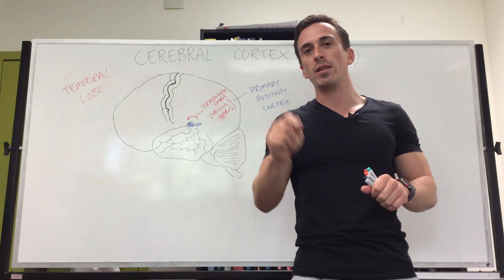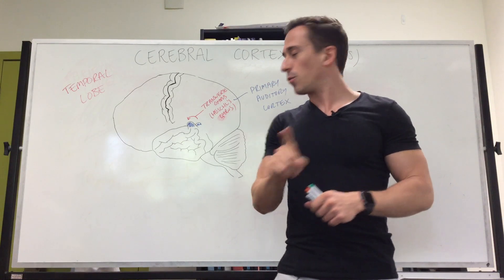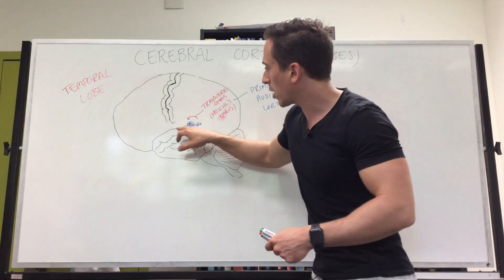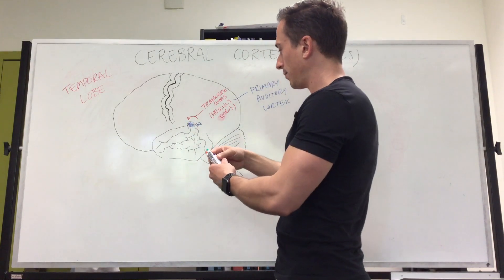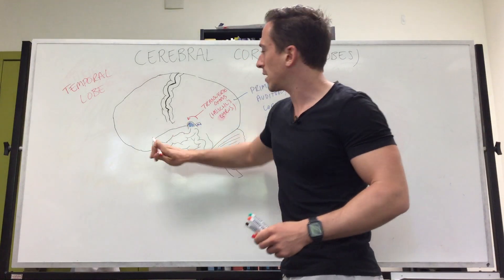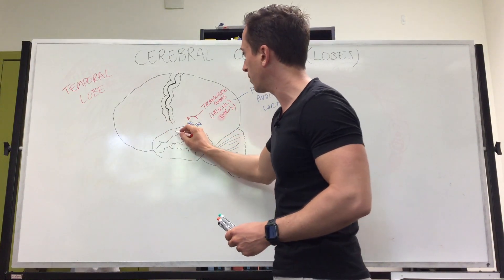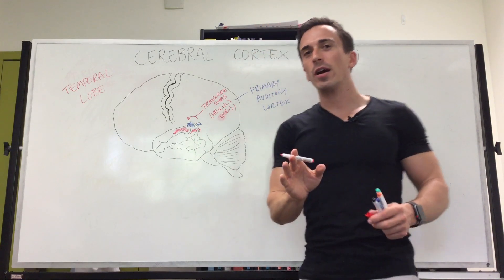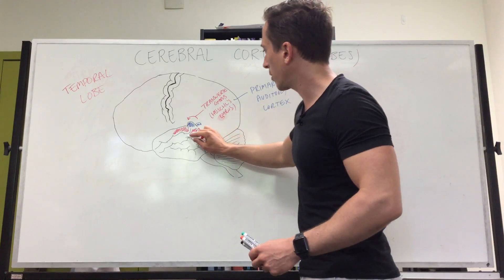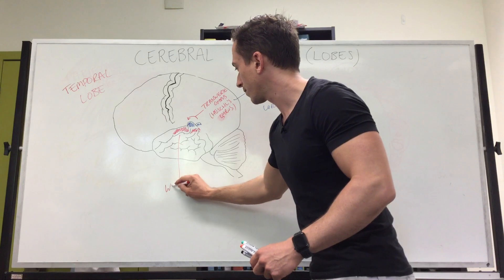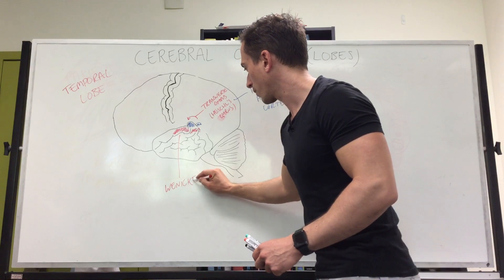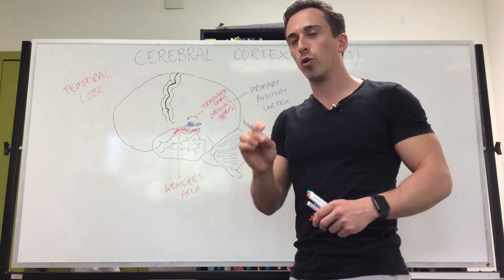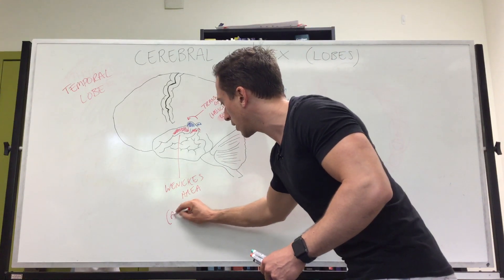We need to identify where the association cortices are. The auditory association cortex is located near Heschel's gyrus. If we take the superior gyrus and go to the posterior end, this area is known as Wernicke's area. I've spoken about Wernicke's area in a previous lecture—it's the association cortex for sound, the auditory association cortex.